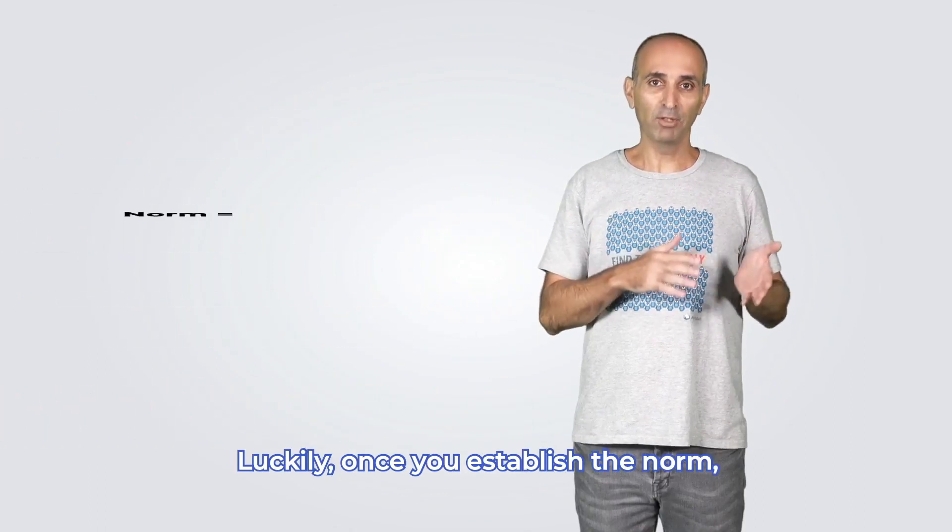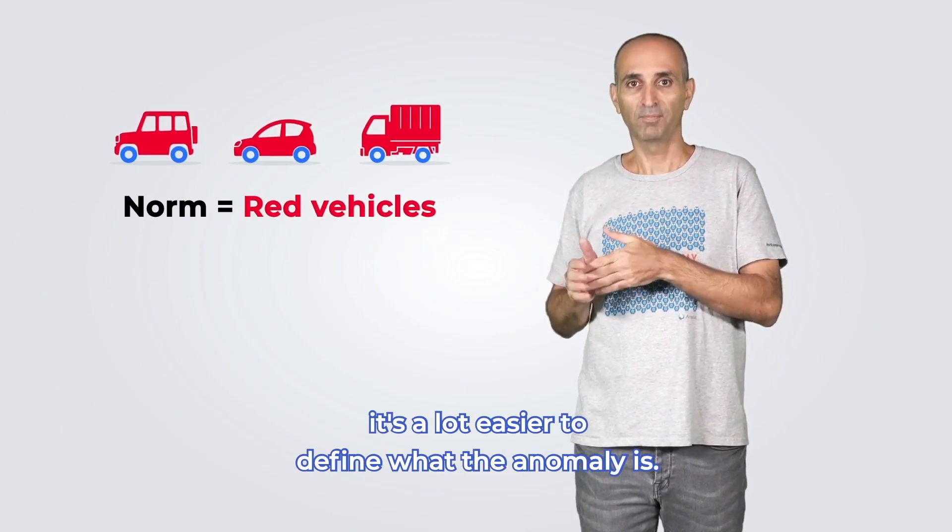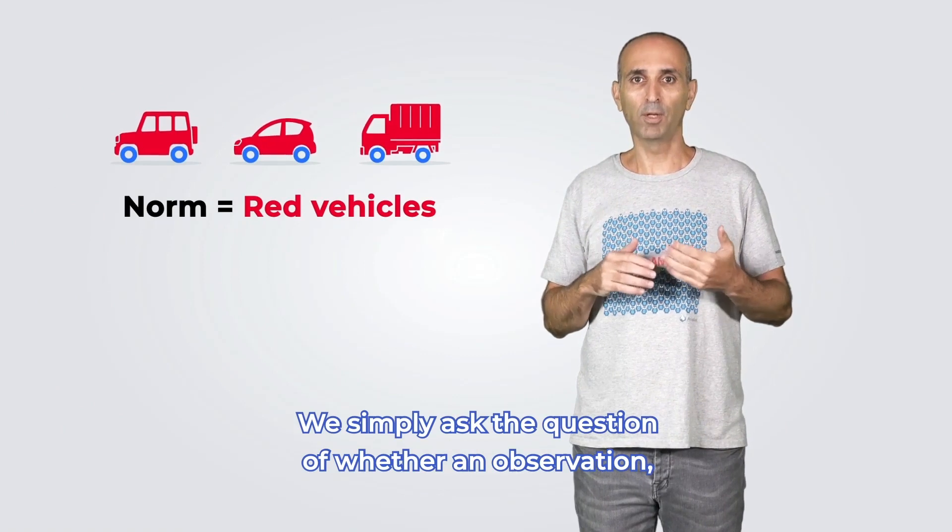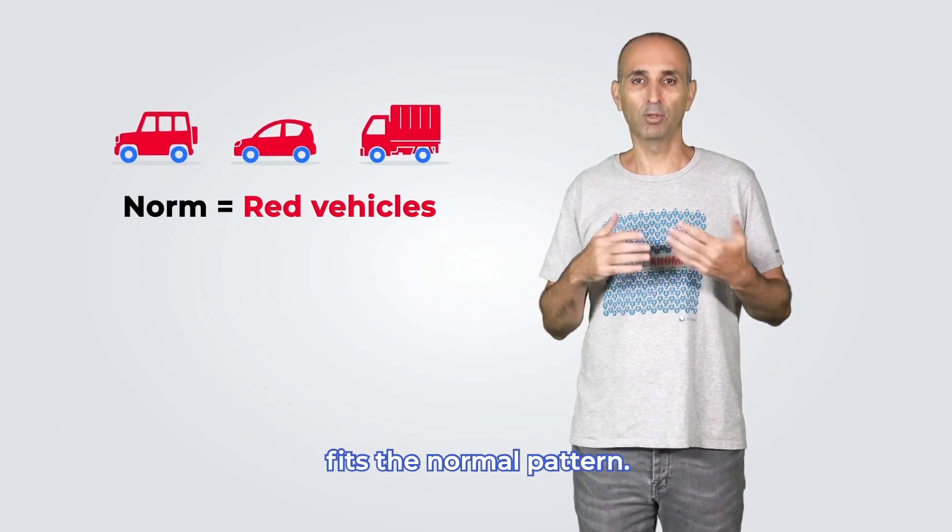Luckily, once you establish the norm, it's a lot easier to define what the anomaly is. We simply ask the question of whether an observation, in this case a particular vehicle, fits the normal pattern.